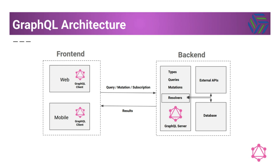Here is a basic architecture diagram where we have a GraphQL client and a server. The GraphQL client will be able to send HTTP requests including queries, mutations, or subscriptions. The GraphQL server is going to process those requests using a resolver, and this resolver will get the data from a database or a REST API, for example. Then the GraphQL server is going to return a result back to the GraphQL client, typically using a JSON format.